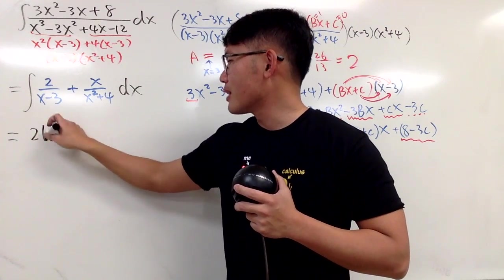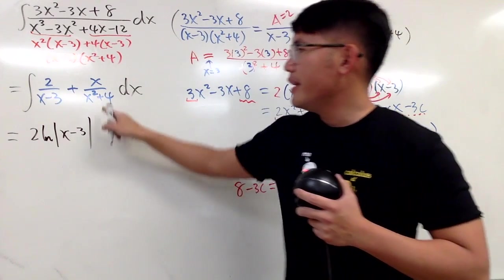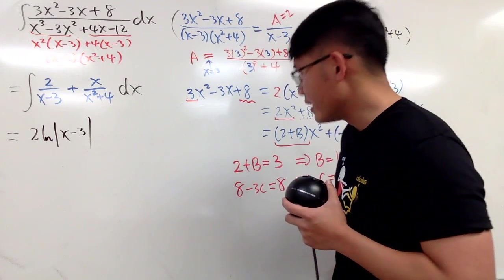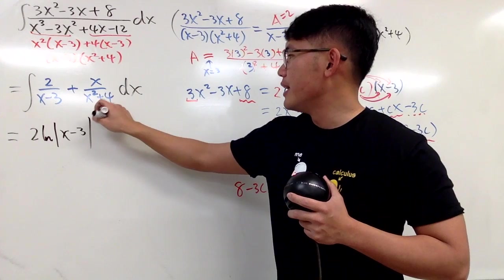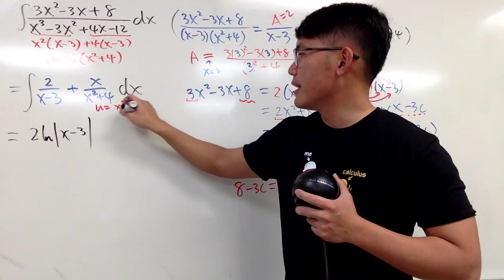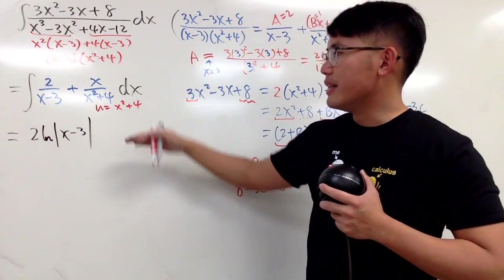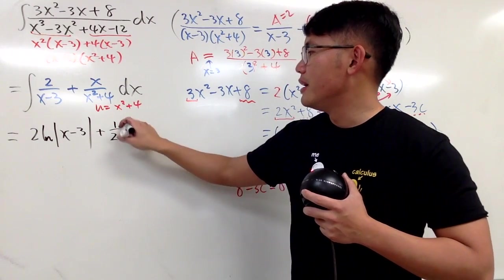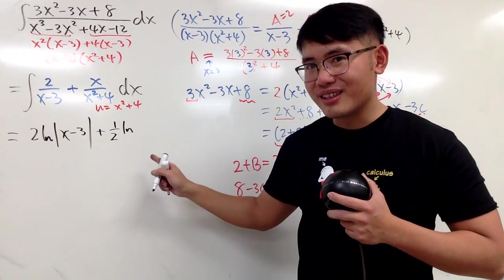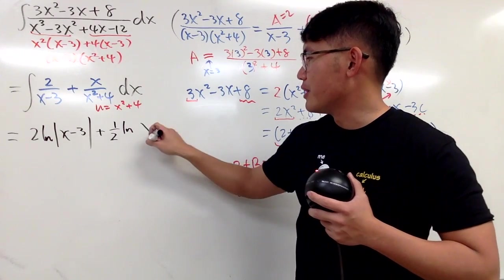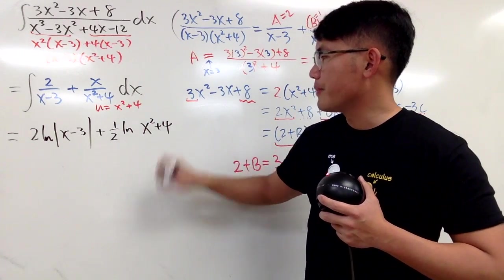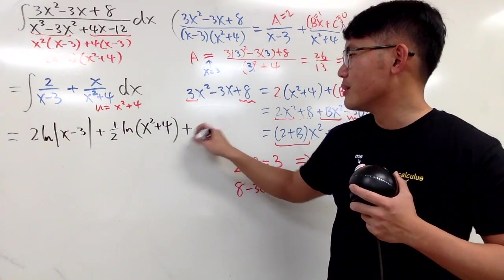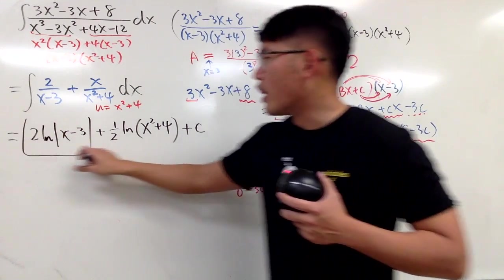Integrating this, you get 2 natural log absolute value of x minus 3. Integrate this. How do you do it? Yes, you do u substitution. I'll just write this down right here for you guys on the side, okay? That u equal to x squared plus 4. And then you do all that stuff, okay? I'll leave that to you. You add 1 half, also natural log in this case, and you put the denominator here, x squared plus 4. This is always positive. You just need a parentheses. This right here is it. 1/2 plus c. And you are done.